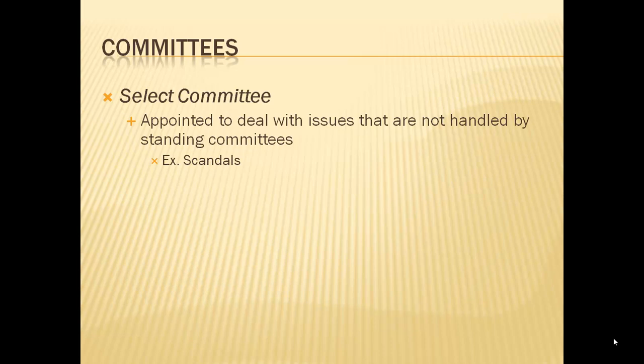The most common example of a select committee is dealing with scandals. For example, the General Petraeus situation — former head of the CIA dealing with a sex scandal. We're not going to have people waiting around for scandals to pop up; when they do, we form a committee, usually within the ethics committees, to deal with how to handle it. Every scandal is unique in terms of risk to the government. When it is the chief of the CIA with a huge potential risk of leaks and compromising the safety of our troops, then we have to address it.